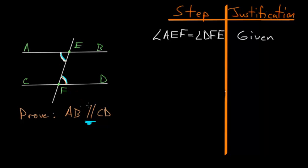And the way to prove that these two lines are parallel is to first make the assumption that AB is not parallel to CD. So AB is not parallel to CD. And once we make this assumption,